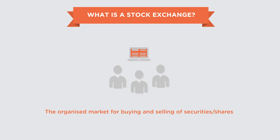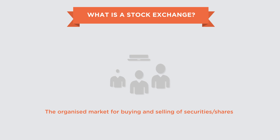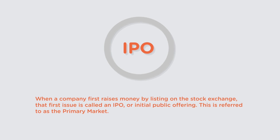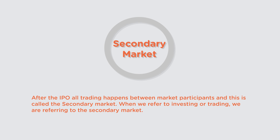So what's a stock exchange? A stock exchange in simple words is the organized market for buying and selling of securities. The prices of securities are governed by the forces of demand and supply — if too many people start selling shares the price will fall, and if demand is high and people are aggressively buying, prices will naturally go up. When a company first raises money by listing on the stock exchange, that first issue is called an IPO or Initial Public Offering, and this market is referred to as the primary market.